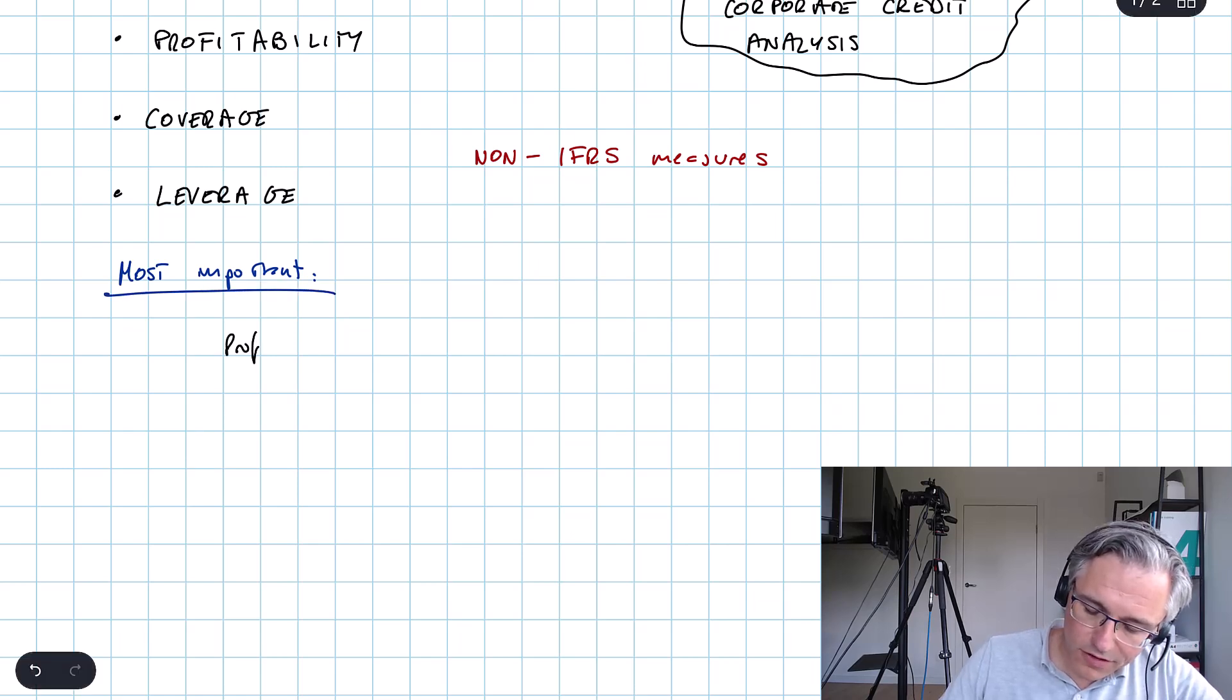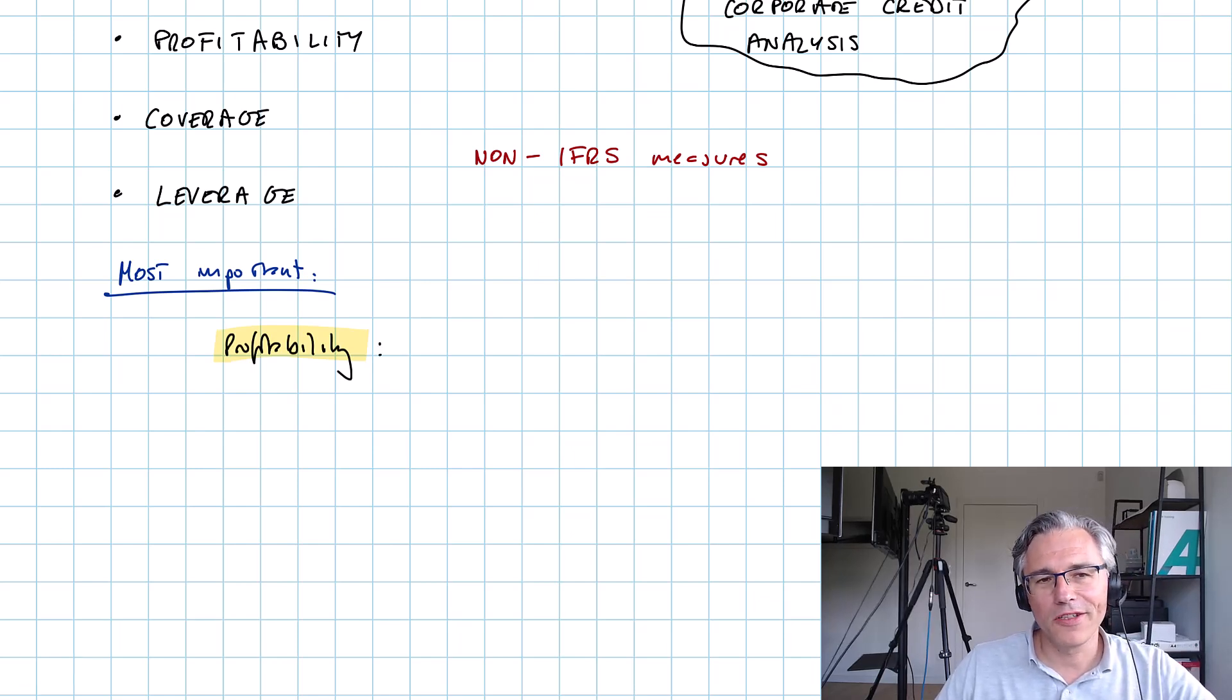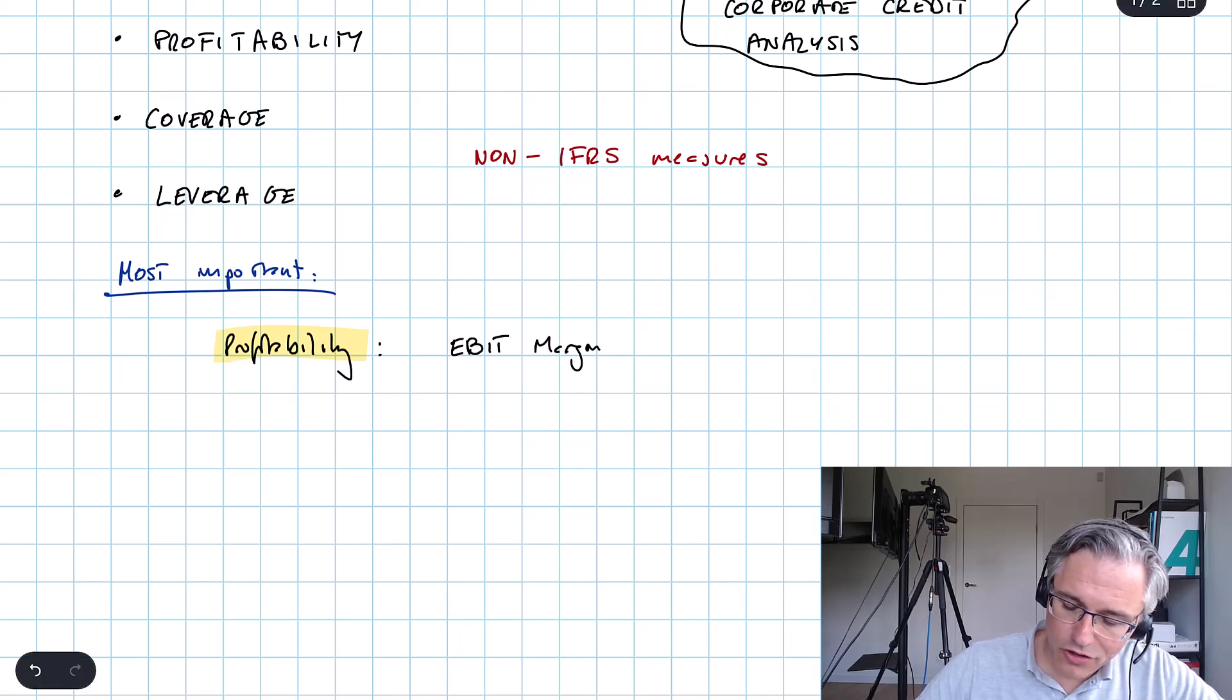Okay let's move on to the most important metrics, most important ratios within each of the categories, starting with profitability. As you will probably expect and appreciate, a lot of the profitability measurement when it comes to credit risk analysis is going to be centered around the notion of operating profit. It is after all operating profit from which we derive operating cash flows, and it's those operating cash flows that provide a company a way to service its debt.